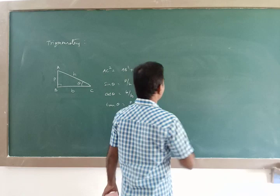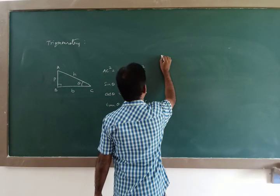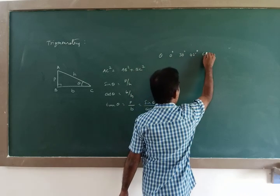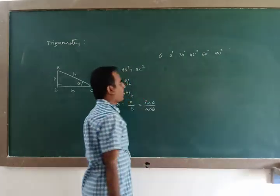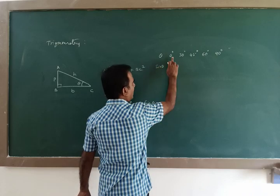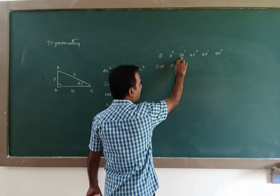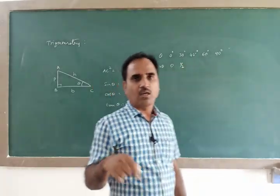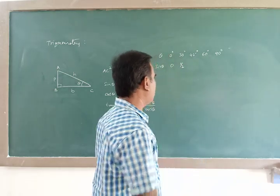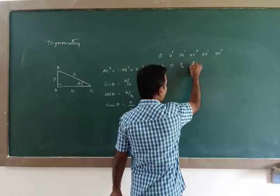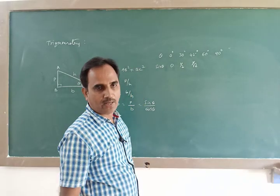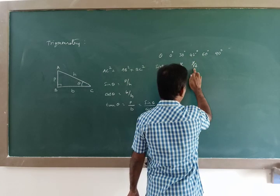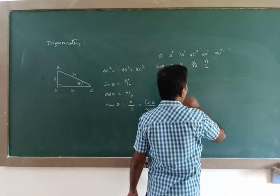There are standard angles: 0°, 30°, 45°, 60°, 90°. For sin θ at these angles: sin 0° = 0, sin 30° = 1/2, sin 45° = 1/√2, sin 60° = √3/2, sin 90° = 1. If you cannot recollect these values, remember this table permanently.